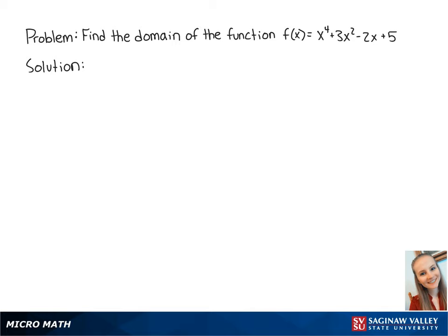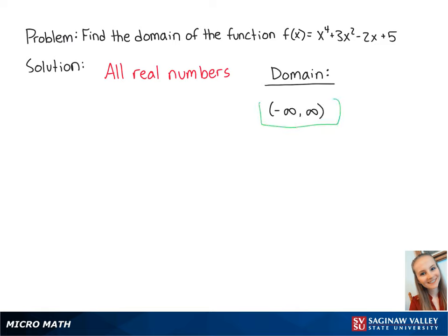For any polynomial function, x can be all real numbers. So the domain is the set of numbers between negative infinity and positive infinity, and this is the final answer.